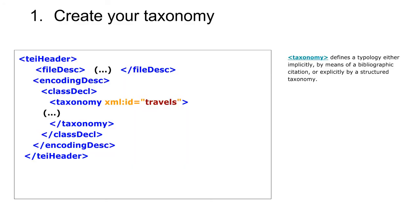The first thing you need to do is, of course, to create the categories describing the topics you want to index. To do that, we're going to add a new section in the TEI header. Just after the fileDesc section, you need an encodingDesc, that is an encoding description section.